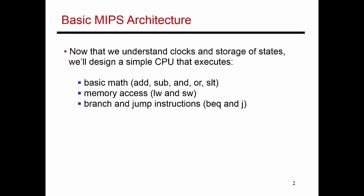Let's first start with what the basic requirements are from this simple CPU. It should be capable of performing basic math operations, very similar to the capabilities of the 32-bit ALU that we designed a few weeks ago. This design should also be capable of memory accesses — exchanging values between registers and memory with load and store instructions. And then it should be capable of basic control flow, supporting a simple instruction like branch on equal to, as well as jump instructions. These are the basic instructions that will be supported by our simple architecture.